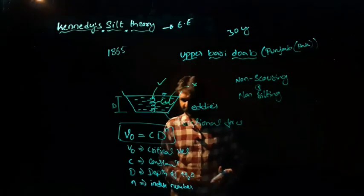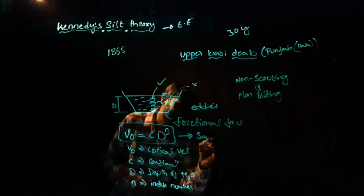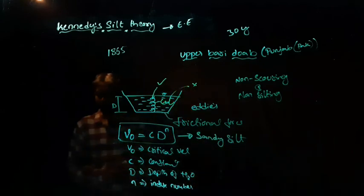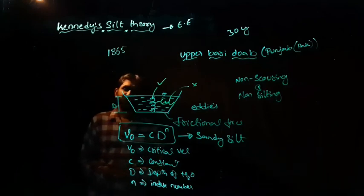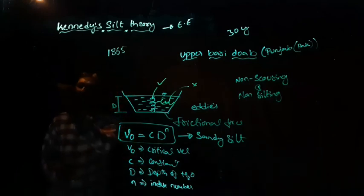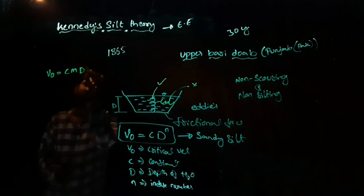But later on, he realized that this will be useful only for sandy silt soils. Later on, he realized that it should be valid for all the types of soils. Then he modified his formula that is V0 is equal to c m d to the power of n.